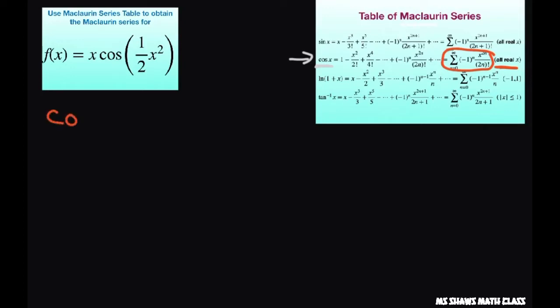So writing it bigger, I have cosine of x equals the sum from n equals zero to infinity of negative one to the power of n times x to the power of 2n divided by 2n factorial.